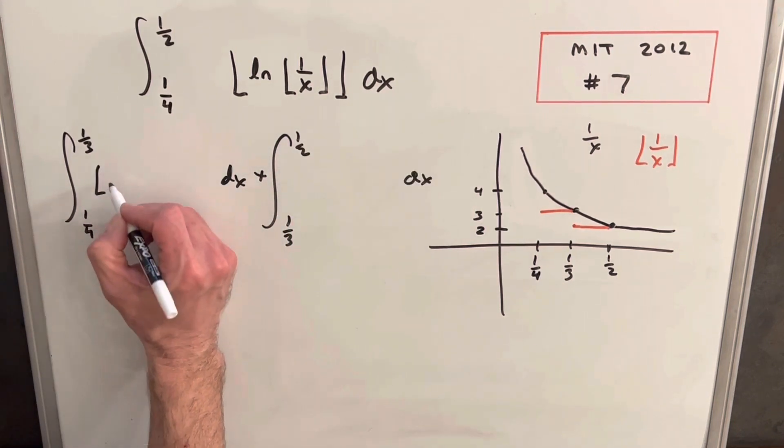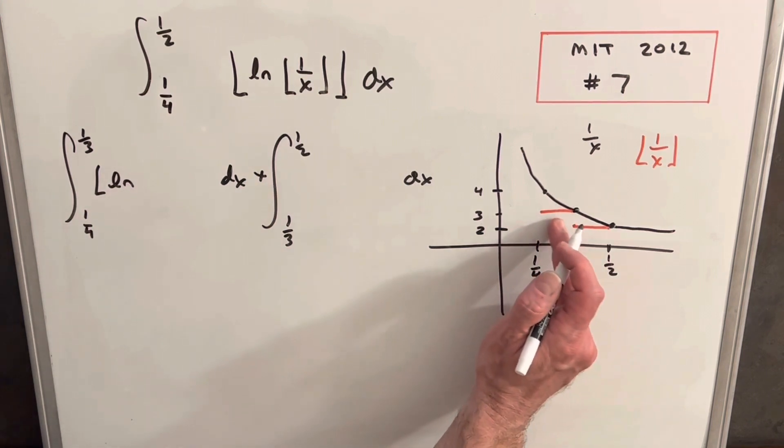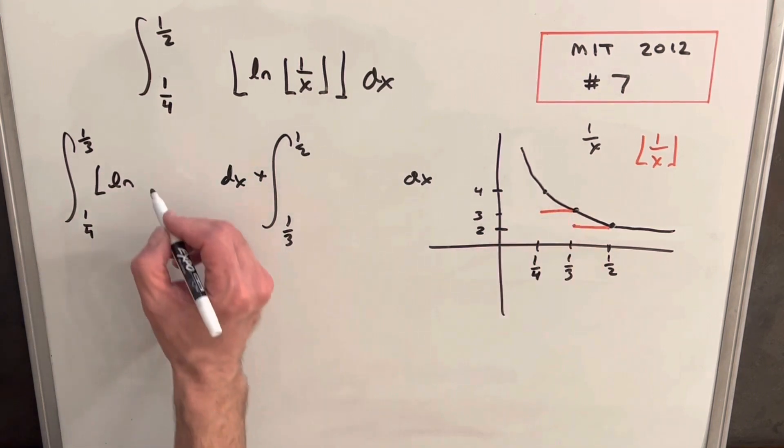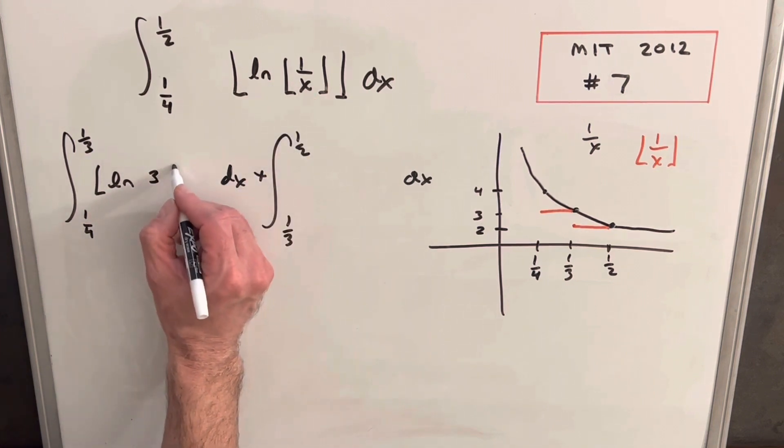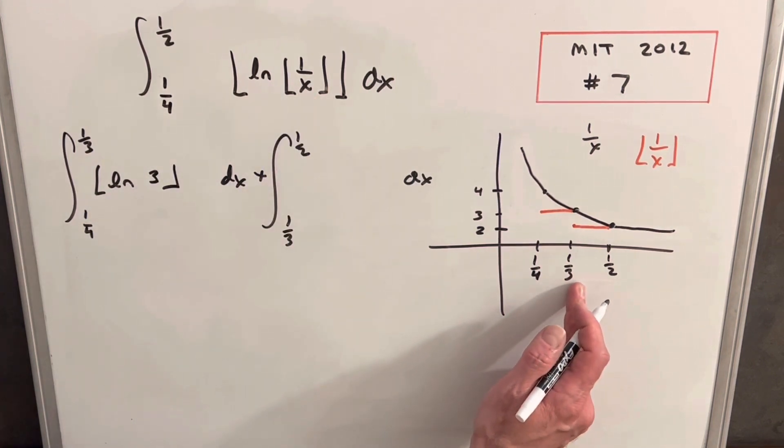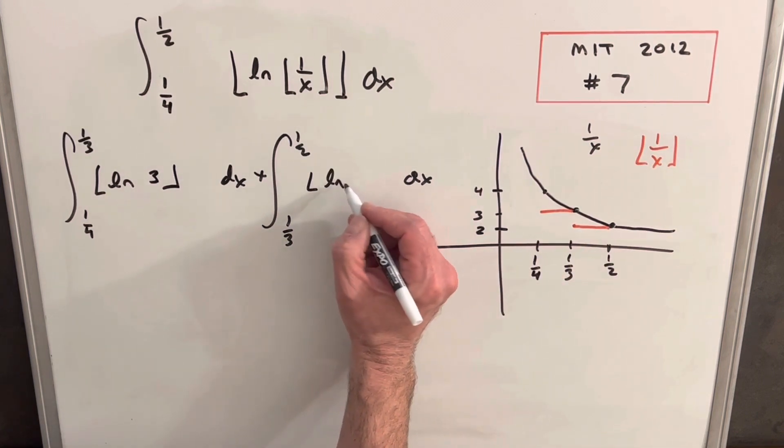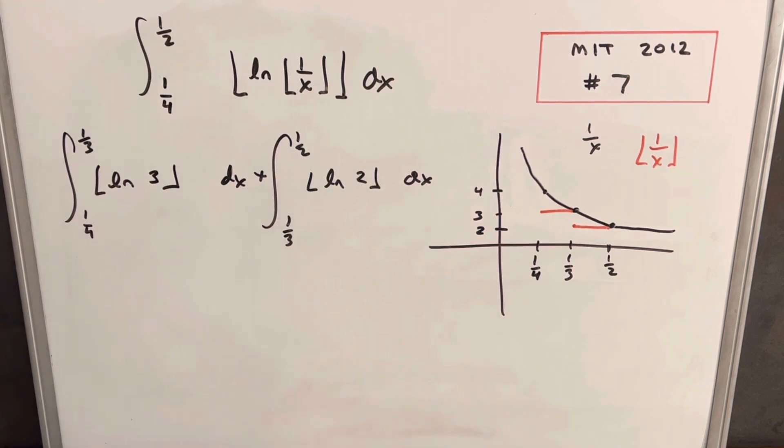So for this first one, we're going to have natural log. Between one-third and one-fourth, notice everything is three. So our input here is just going to be three for the floor one over x. And then in our region from one-third to one-half, everything's two. So very similar, we're just going to have natural log, the floor of natural log of two dx.